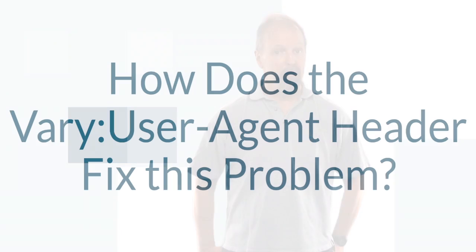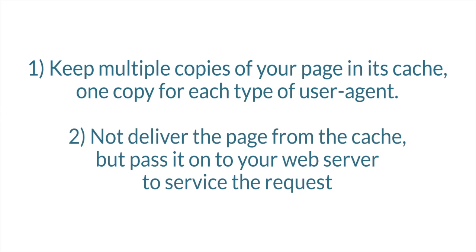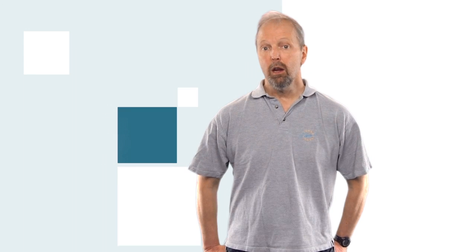So, how does the vary user agent header fix this problem? Well, when the ISP sees the vary user agent header, they will do one of two things. One is to keep multiple copies of your page in its cache, one for each user agent. Or two, they may decide to not deliver the page from the cache, but pass it onto your web server to service the request. Either way, you're better off for using this header.